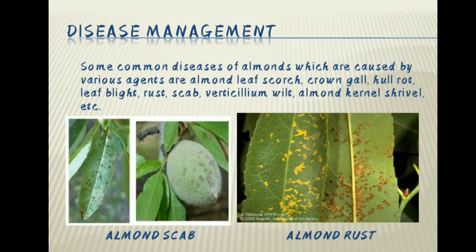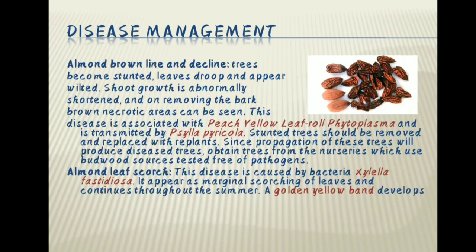Disease management. Some common diseases of almond are almond leaf scorch, crown gall, hull rot, leaf blight, rust, scab, verticillium wilt, almond kernel shrivel, etc. Almond brown line and decline: trees become stunted, leaves droop and appear wilted. Shoot growth is abnormally shortened and on removing the bark, brown necrotic areas can be seen. This disease is associated with peach yellow leaf roll phytoplasma and is transmitted by Scylla piricola. Stunted trees should be removed and replaced. Obtain trees from nurseries which use budwood sources tested free for pathogens.